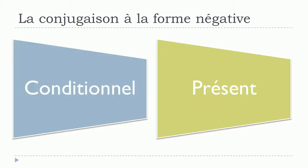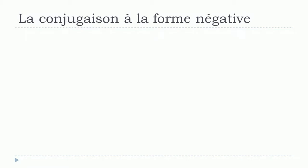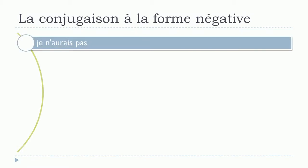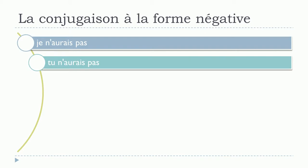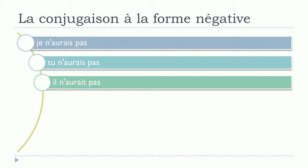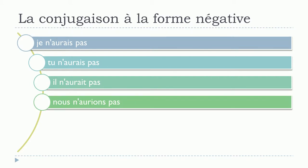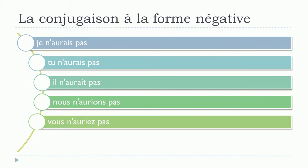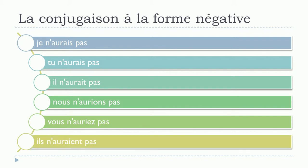Conditionnel présent. Je n'aurais pas. Tu n'aurais pas. Il n'aurait pas. Nous n'aurions pas. Vous n'auriez pas. Ils n'auraient pas.